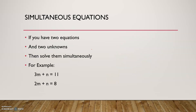Some basics about simultaneous equations. If you have two equations and two unknowns, the rule of thumb is to solve them simultaneously. For example, we have two equations here: 3m plus n equals 11 and 2m plus n equals 8. So we have two linear equations and two unknowns.